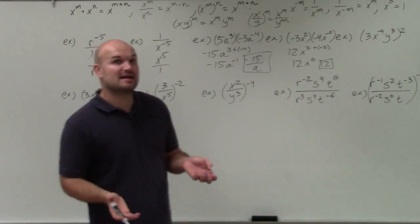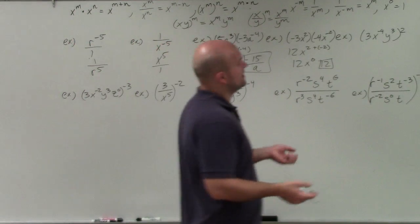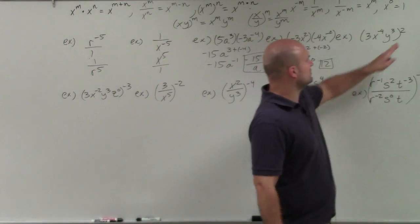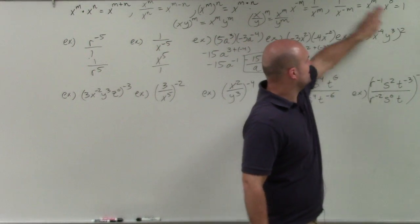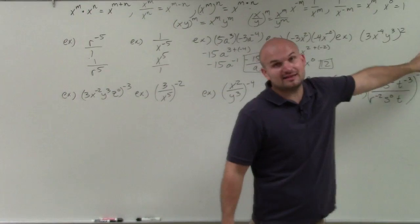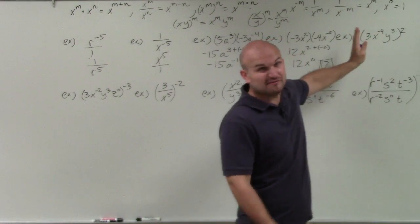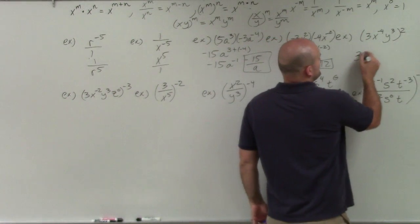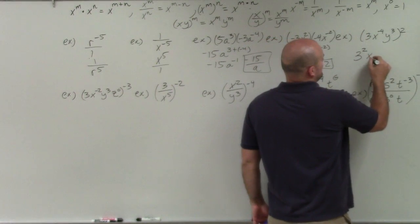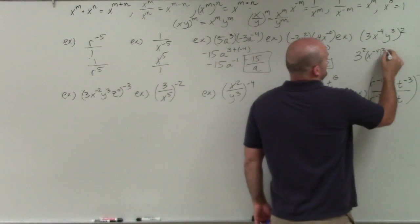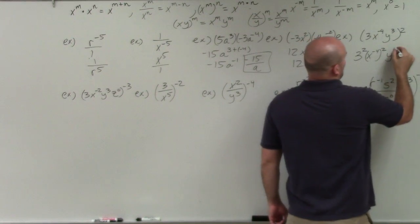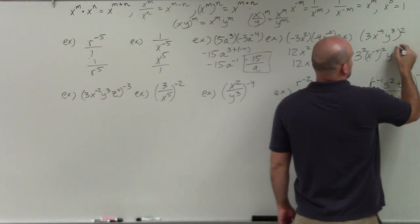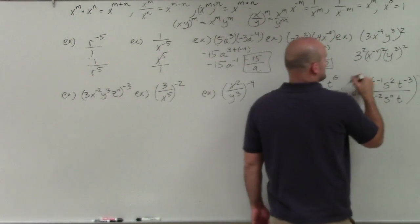The next one requires us to apply the power to product rule. Remember, you're applying that exponent of 2 to each and every one of those terms. So it's going to be 3 squared, x to the negative 4 squared, y cubed squared.